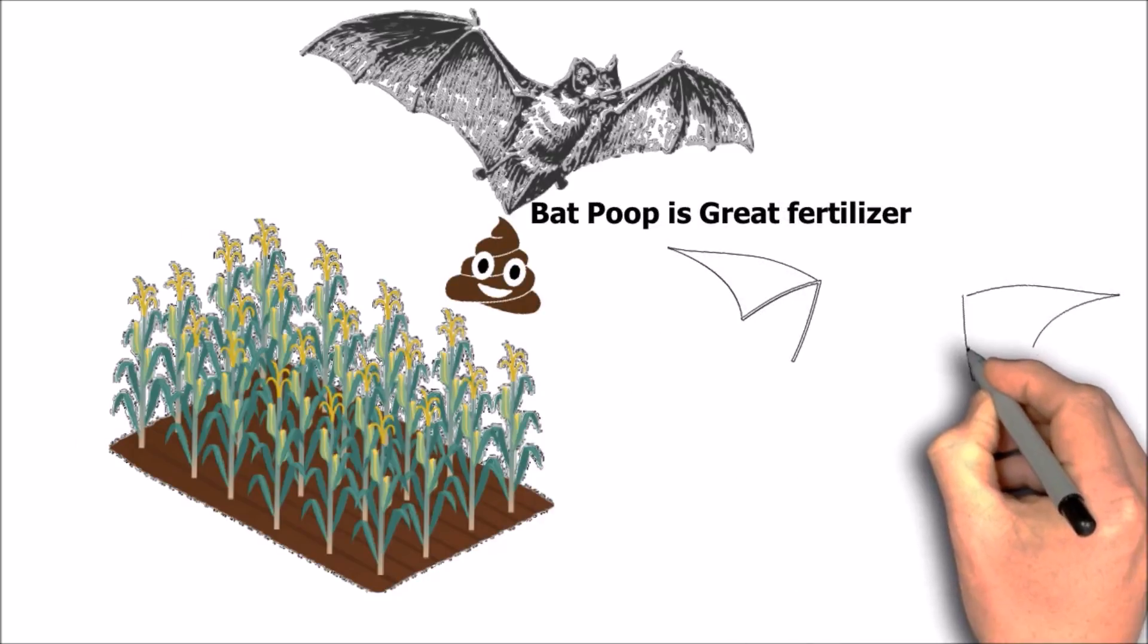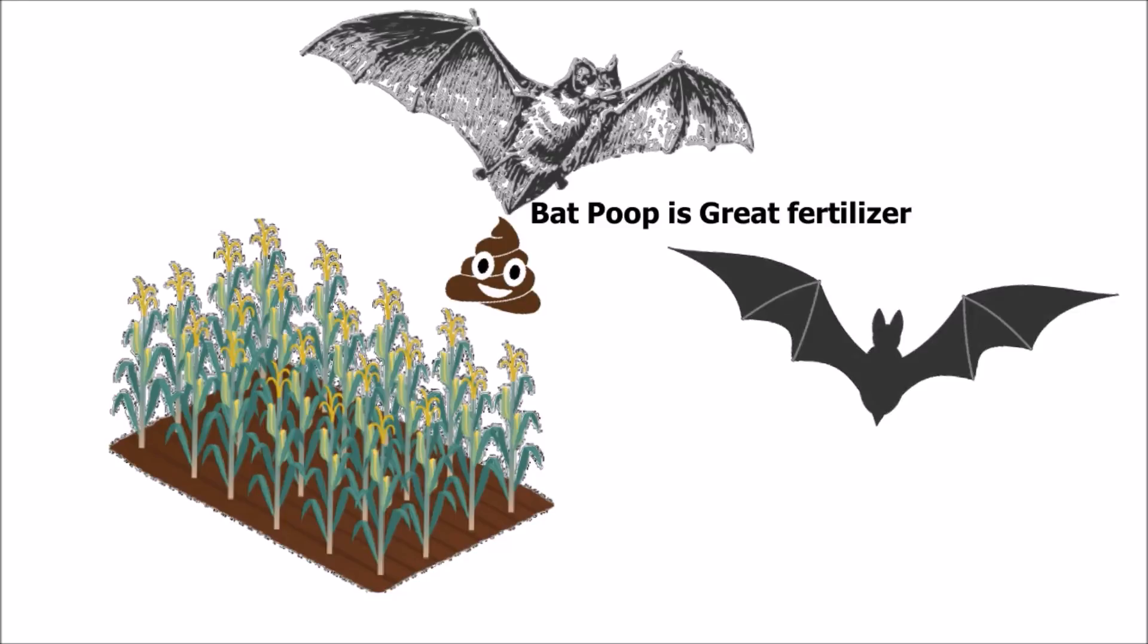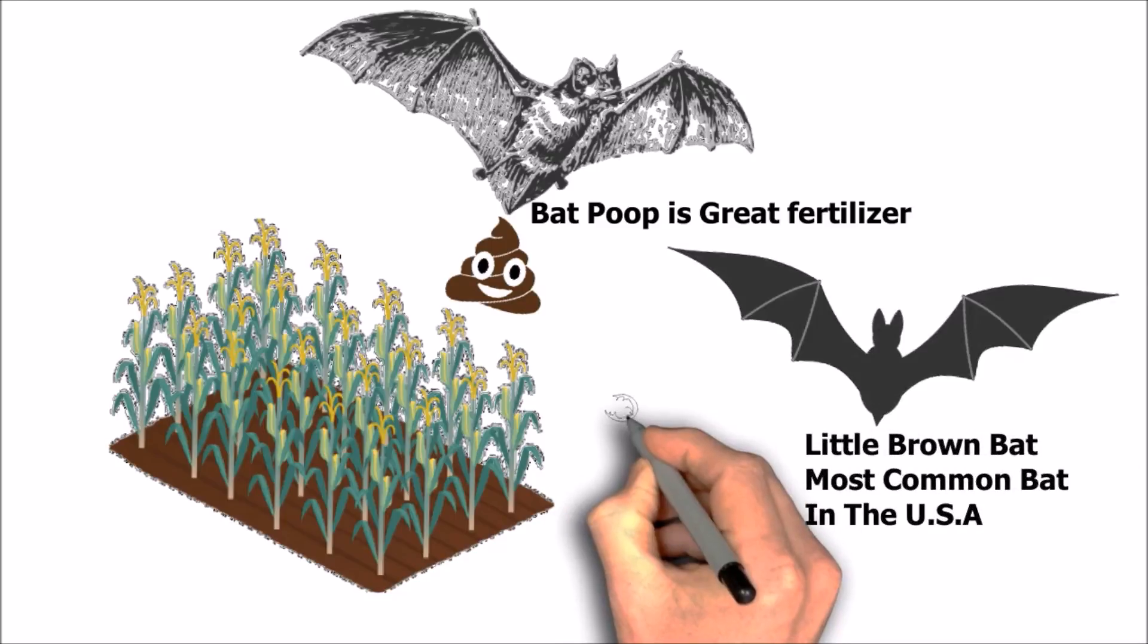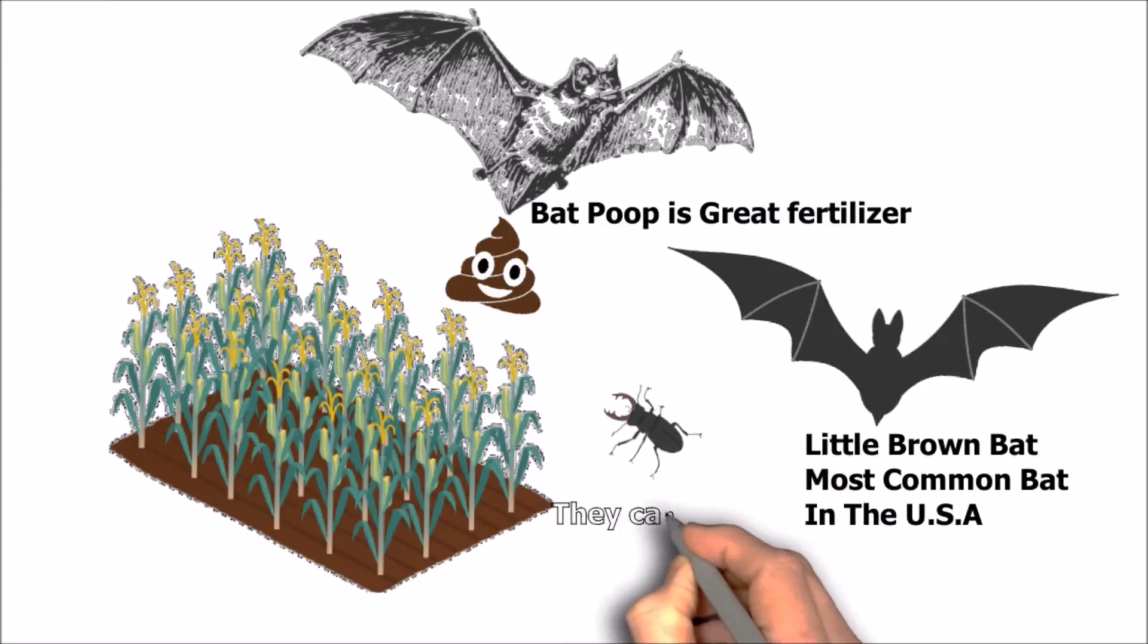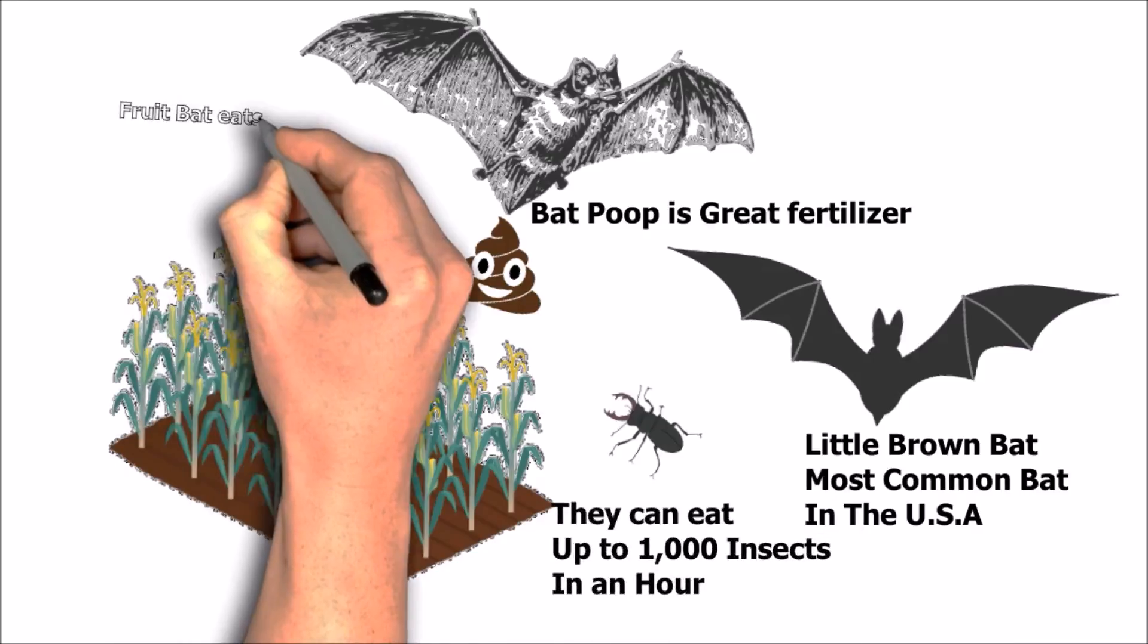And the brown bat, the most common bat in the USA, that bat can eat up to a thousand insects in just an hour. You know how much that is? That's a lot of insects.